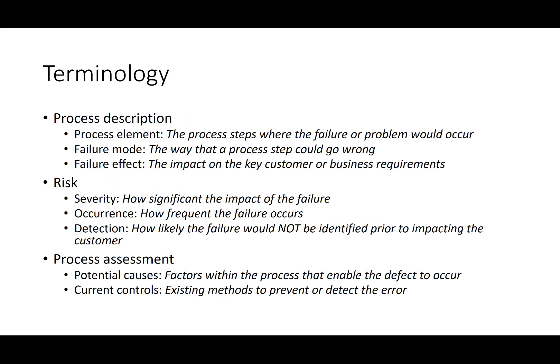Looking at the process terminology within the FMEA, the process description includes three elements: the process element, which is the process step where the failure or problem would occur; the failure mode, the way that a process step could go wrong; and the failure effect, which is the impact on the key customer or business requirements. The risk has severity — how significant the impact of the failure — occurrence, how frequent the failure occurs, and detection, how likely the failure would not be identified prior to impacting the customer.